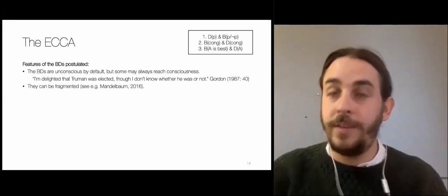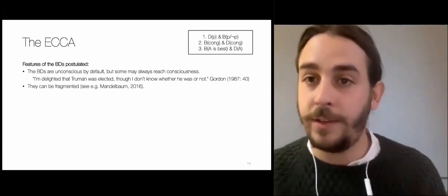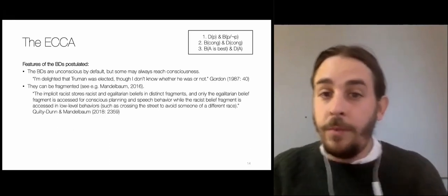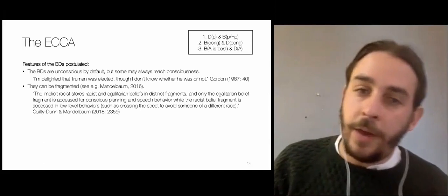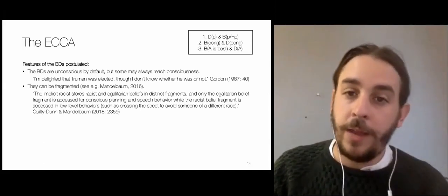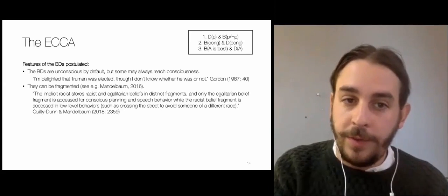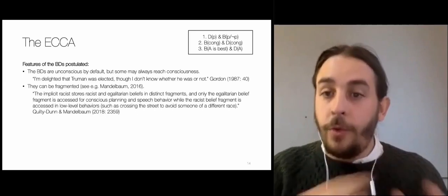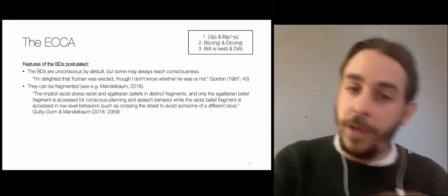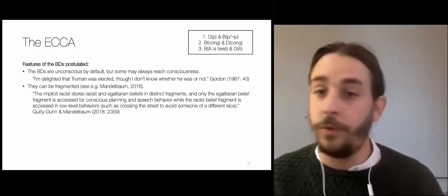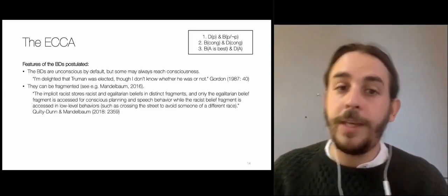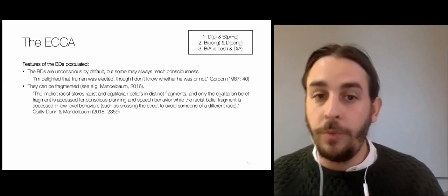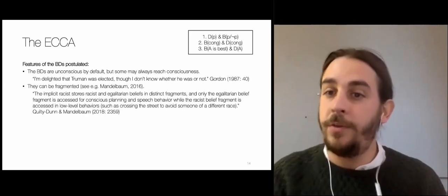The racist belief fragment is accessed in low-level behaviors such as crossing the street to avoid someone of a different race, or in implicit association tasks — another kind of low-level behavior that would reveal the racist belief fragment.